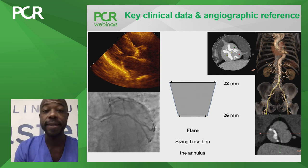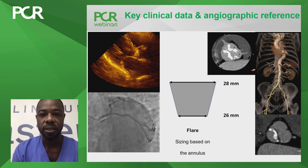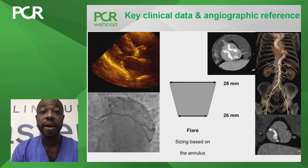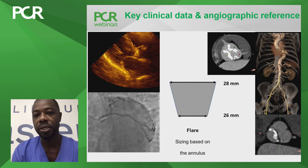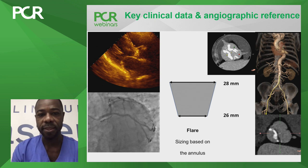In summary: normal LVEF, Type 1 bicuspid with right-left coronary fusion, no coronary artery disease, abnormal right coronary artery takeoff from the commissure, and a flared configuration by the Harvard registry sizing algorithm — with commissure-to-commissure distance greater than the mean perimeter-derived annulus diameter.